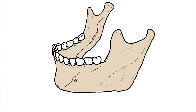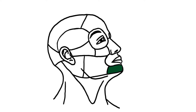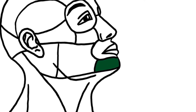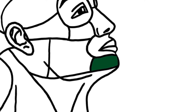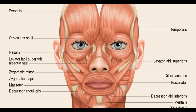Hey guys, it's Layla. Today we'll speak about the mental region. The superior border is the gingiva-buccal fold and the inferior border would be the mandibular base. There are three muscles in this region that you need to remember.